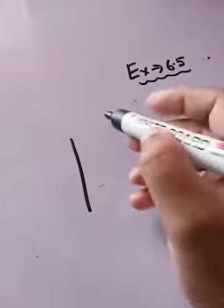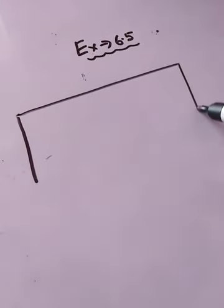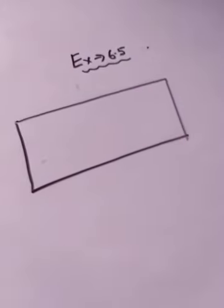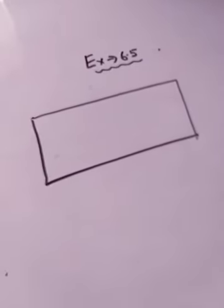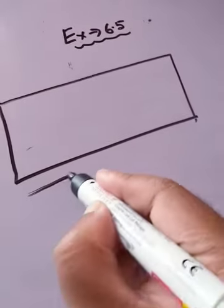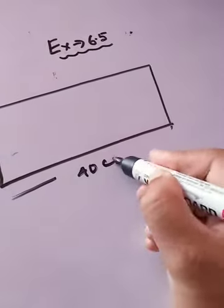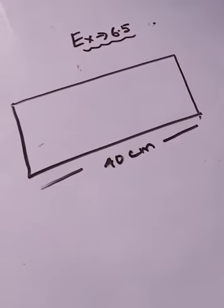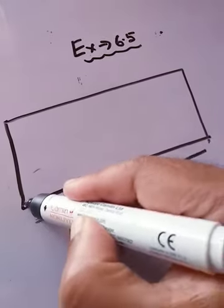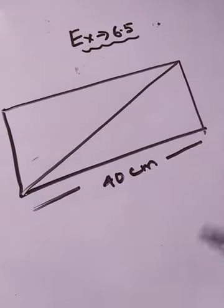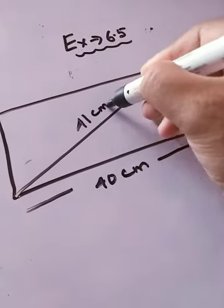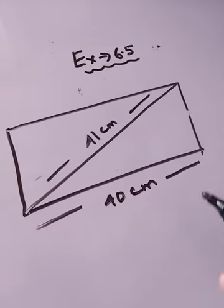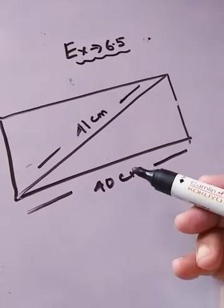We have to draw this rectangle. The length is given as 40 centimeters and the diagonal is given as 41 centimeters. The diagonal means this one shown in the figure.